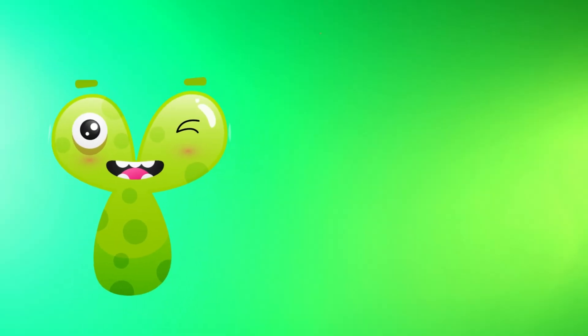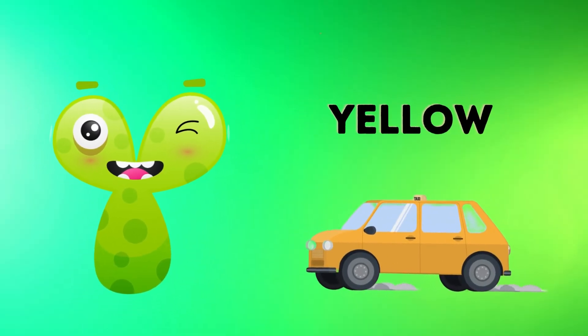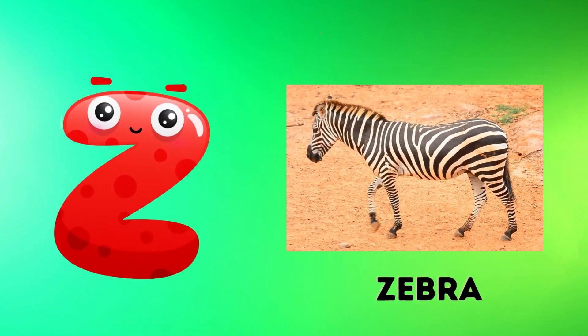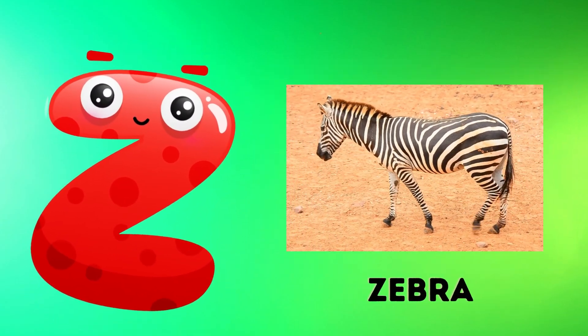Y is for yellow, y-y-yellow. Z is for zebra, z-z-zebra.